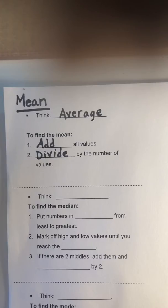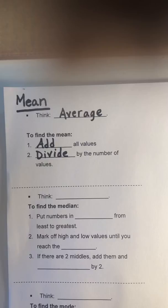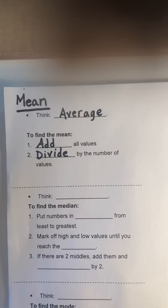Now, you've heard the word average quite a bit. Mathematicians always like to have their fancy words for things, but the math word is mean. So we think average, but to find this, we add all the values and then we divide by the number of values that we added.